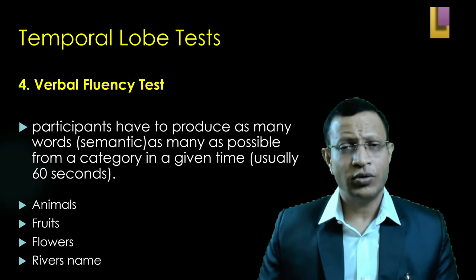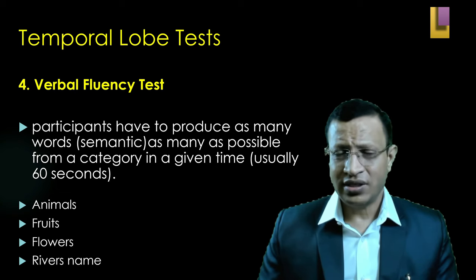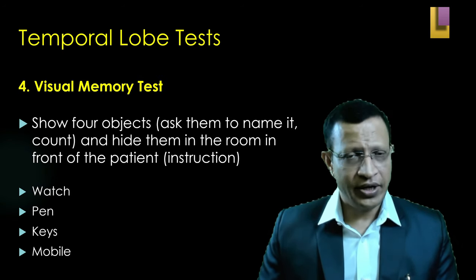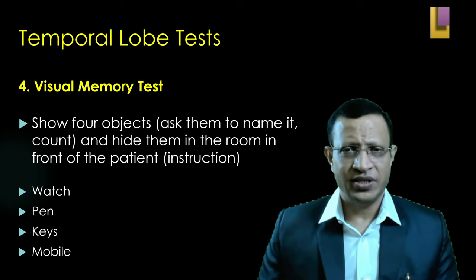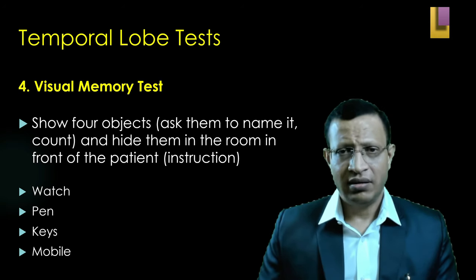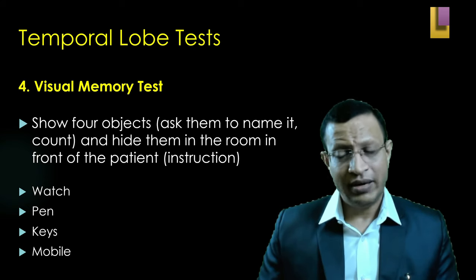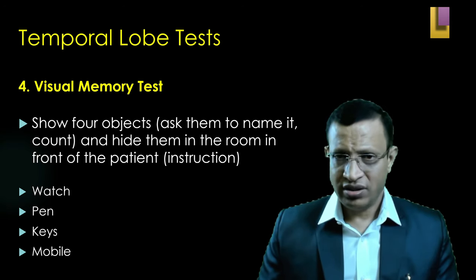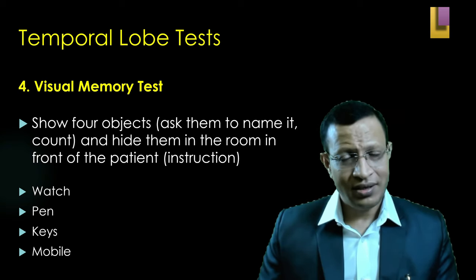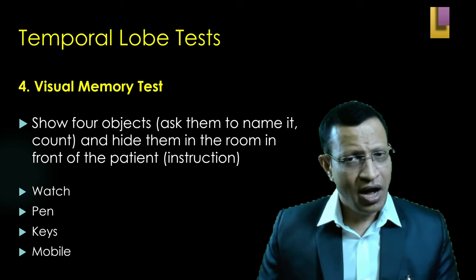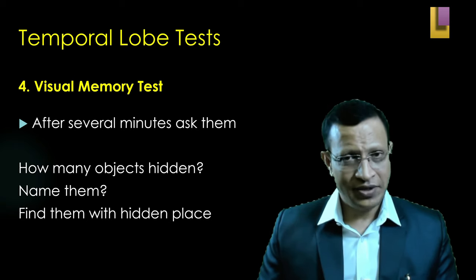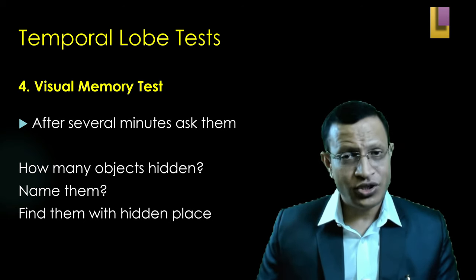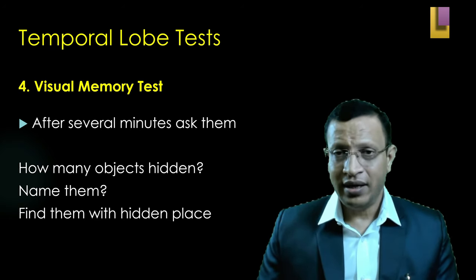Moving to visual memory. Take four random objects available — maybe a watch, pen, keys, and mobile. Show them to the patient, ask them to name them, then hide the objects inside the room in front of the patient. Tell him: 'I will ask after 5 to 10 minutes what those objects were, how many there were, and where I hid them.' Ask the patient to name the objects and locate where each was hidden. This method assesses whether the patient has good visual memory.